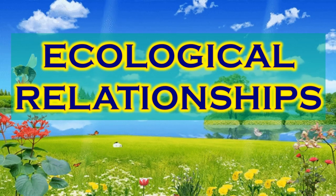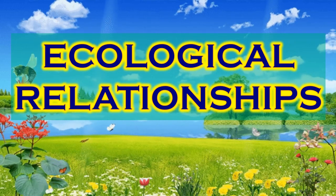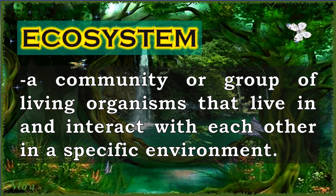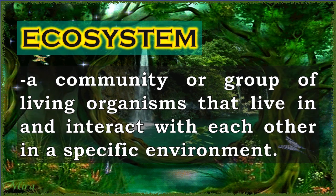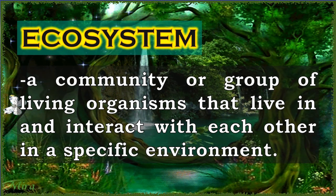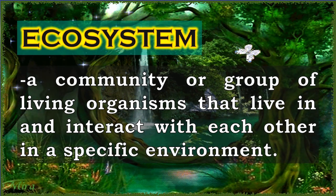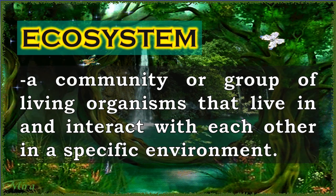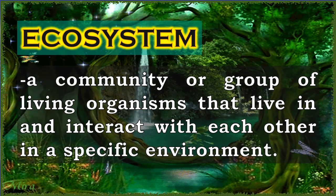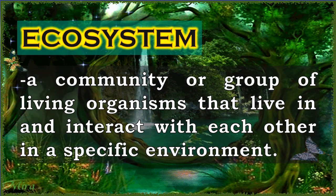Now, let us talk about ecological relationships. But before that, let us define ecosystem first. Ecosystem is a community or a group of living organisms that live in and interact with each other in a specific environment. For instance, tropical forests are ecosystems made of living beings such as trees, plants, animals, insects, and microorganisms that are in constant interaction between themselves and are affected by other physical or chemical components.